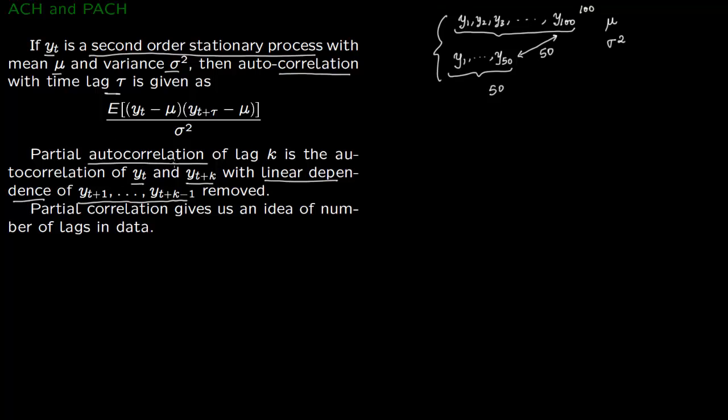What is partial autocorrelation? It's slightly more complicated. You try to remove the linear dependence. In case Y100 is somehow dependent upon Y99 and also dependent upon Y98, plus some error process, you try to remove this Y99 and Y98 before you start taking the linear dependence.